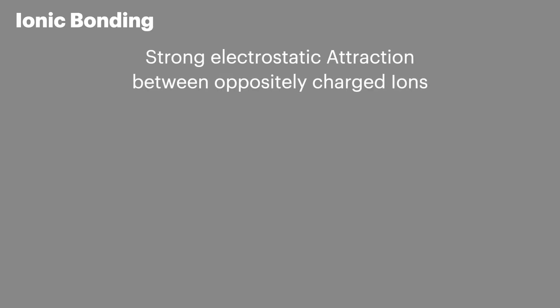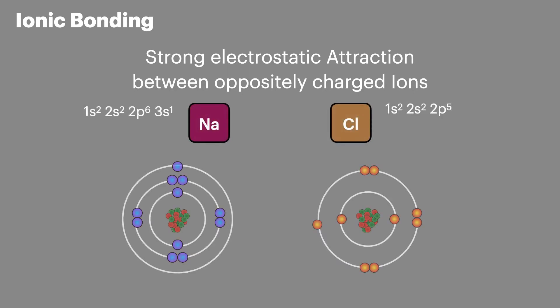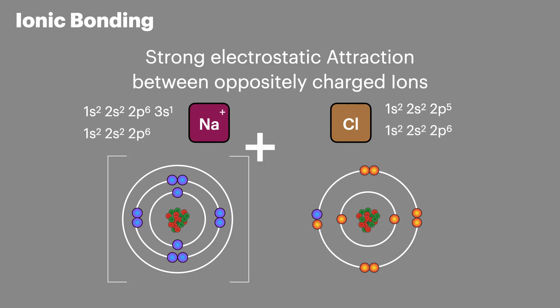An ionic bond is defined as a strong electrostatic attraction between oppositely charged ions. If we look at the ionic bond formed between sodium and chlorine, sodium will lose one electron and chlorine will gain one electron. This will change their electron configurations, forming a positive ion on the sodium and a negative ion on the chlorine. These are oppositely charged ions and they will form strong electrostatic attractions.